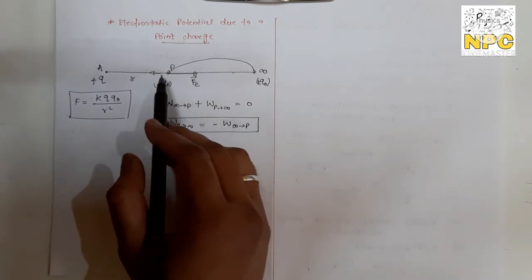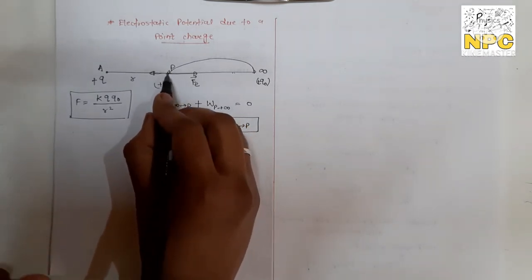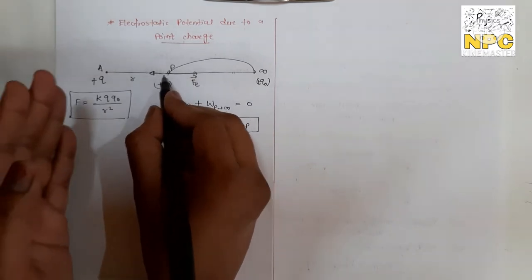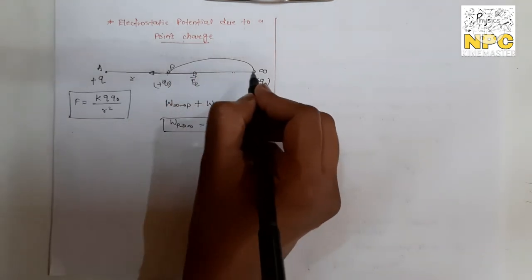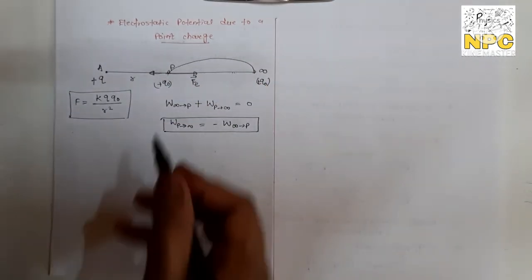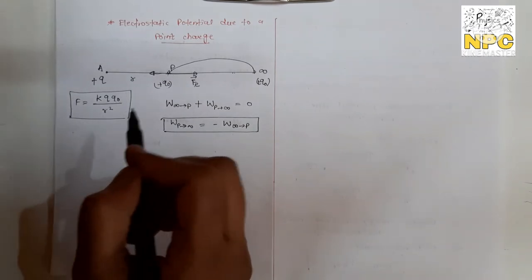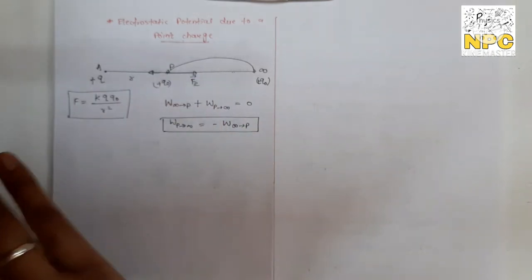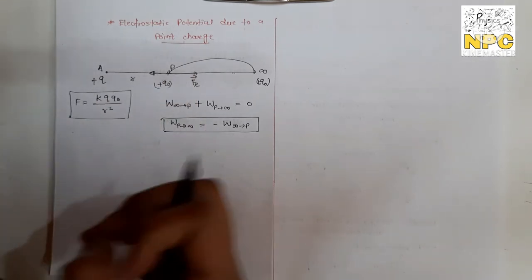External agent works against the electrostatic force so that the charge moves slowly. If the external agent doesn't apply force, the electrostatic repulsion will push Q₀ to infinity on its own. But our purpose is to move Q₀ slowly from P to infinity, so we apply force against the electrostatic force to maintain slow movement and keep kinetic energy constant.